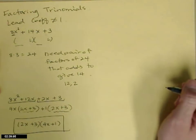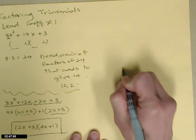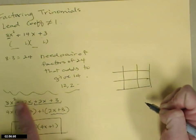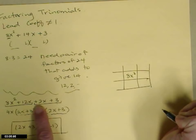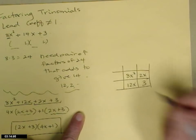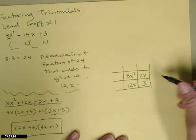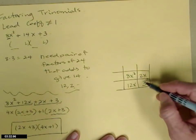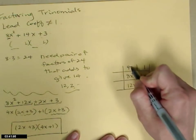Here's an alternative method using a table. You do the same process up until you find the pair 12 and 2, then make a chart with four cells. Put the leading term, 8x squared, in the upper left and the constant term, 3, in the lower right. The 12x and 2x go in the other two cells — it doesn't matter which one goes where. Then look for the greatest common factor going up: 2x and 3 have a GCF of 1; 12x and 8x squared have a GCF of 4x.